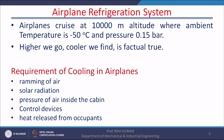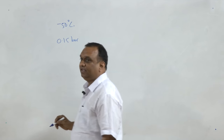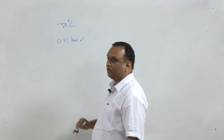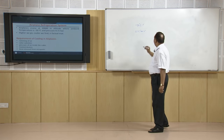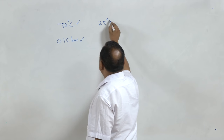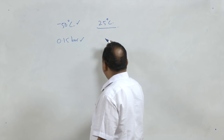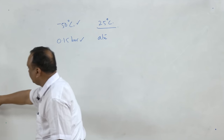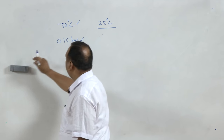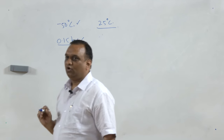An airplane moves at around 10 kilometers above the earth's surface, where the temperature is minus 50 degrees centigrade and pressure is approximately 0.15 bar. Neither can we survive under a pressure of 0.15 bar, nor can we survive under a temperature of minus 50 degrees centigrade.